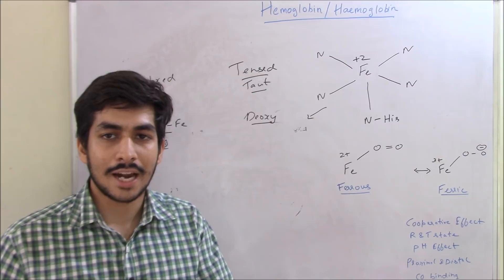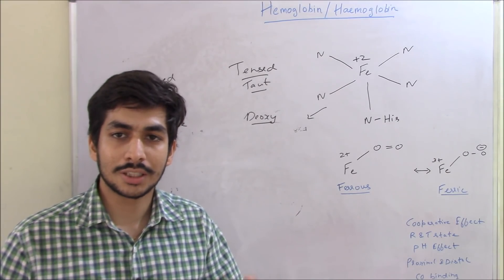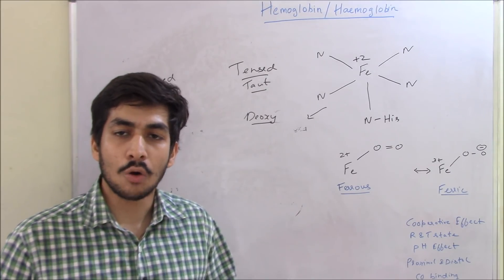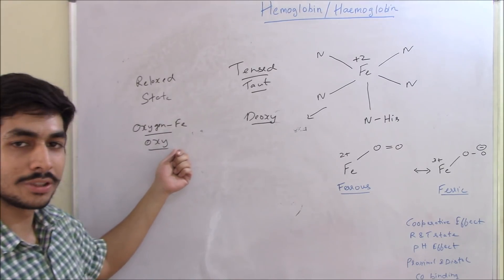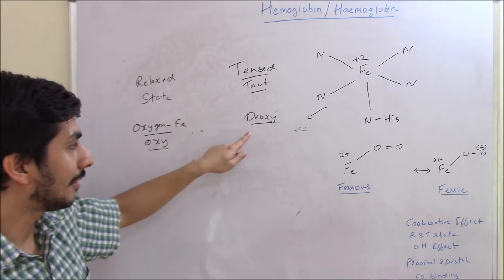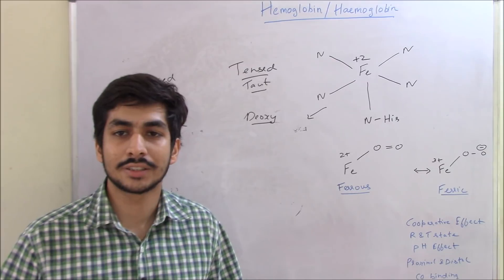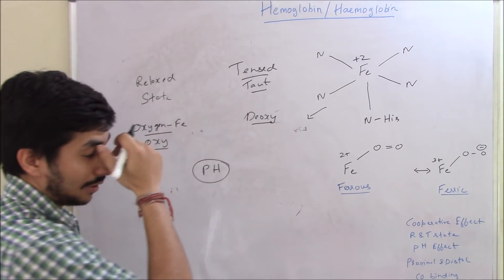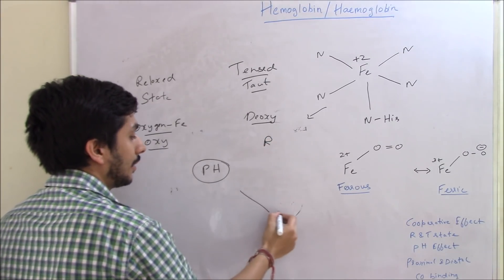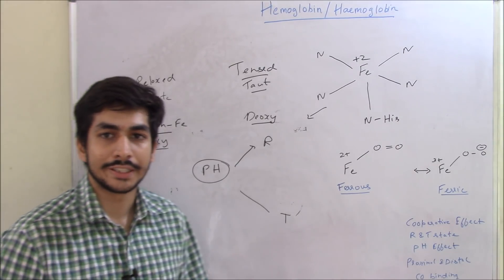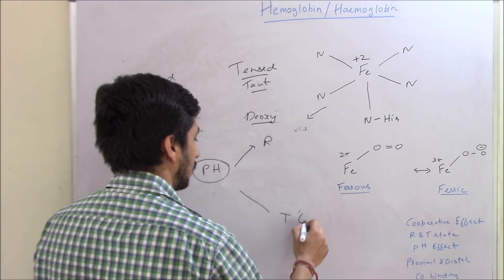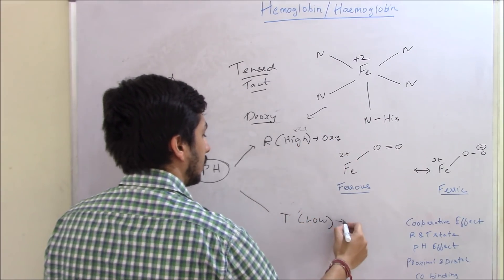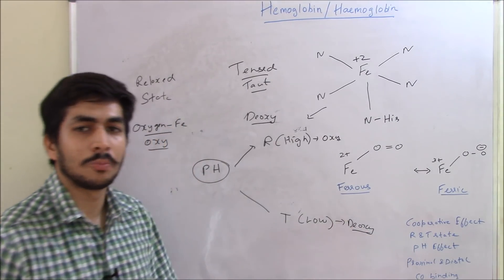Once oxygen binds, the radius of iron decreases because it enters the low spin state. This decrease in radius relaxes the steric repulsions between the porphyrin and the iron, giving the relaxed state. So oxy hemoglobin = relaxed state; deoxy hemoglobin = tense state. This R/T equilibrium can also vary with pH: low pH favors the tense (T) state and high pH favors the relaxed (R) or oxy state.